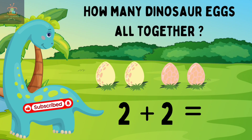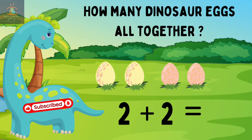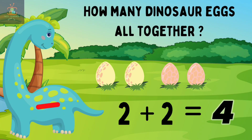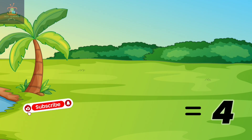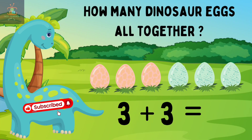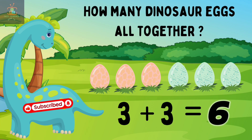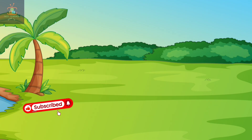How many dinosaur eggs all together? Two plus two — two plus two equals four. Count the eggs: four! Let's count. How many dinosaur eggs all together? Three pink plus three blue equals six.